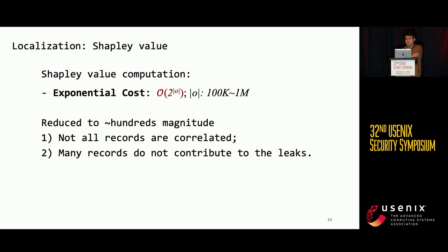The problem is that the complexity of computing Shapley value is exponential to the number of records in one side-channel observation trace, which is infeasible in practice. Fortunately, we can reduce the cost to several hundred in magnitude by utilizing two key properties of side-channel records. First, in a side-channel trace, not all records are correlated, and many records do not contribute to leaks. By utilizing these two properties, we indeed reduce the computation cost.